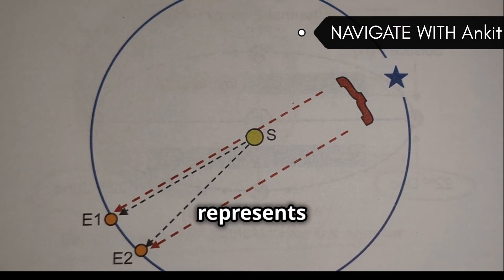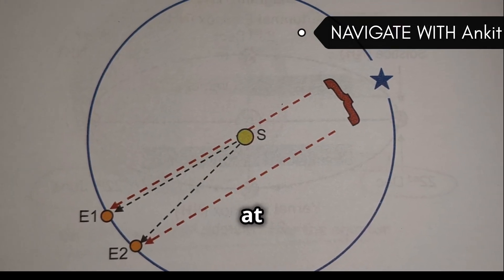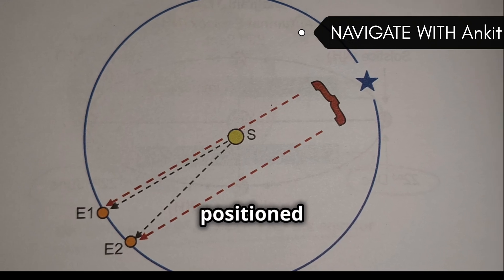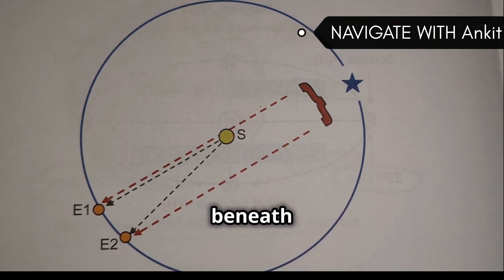Imagine this diagram. The circle represents the Earth's orbit, with the Sun at its center. Here we have the Earth positioned at E1, directly beneath a star at noon.